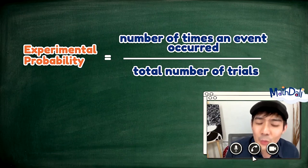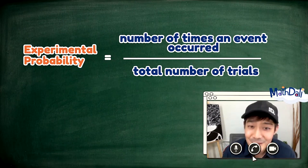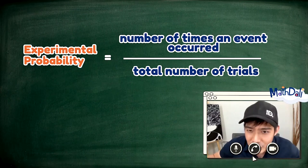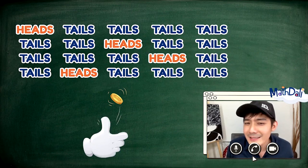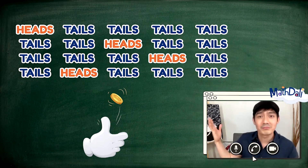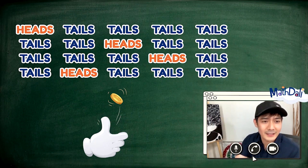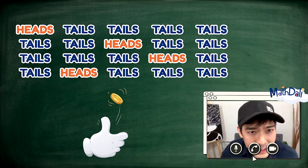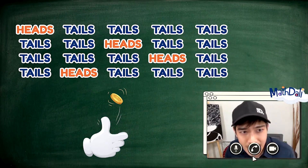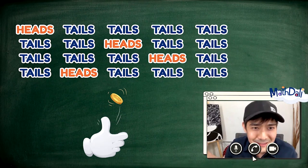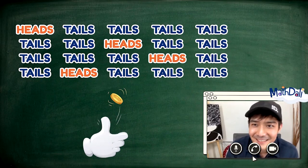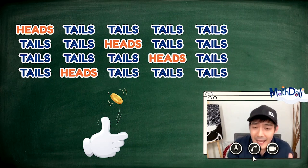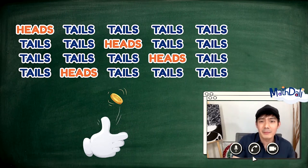Halimbawa, 20 times akong nag-toss ng isang coin. At sa 20 times na yun, ito yung naging result natin: heads, tails, tails, tails, tails, tails, heads, tails, tails, tails, tails, heads, tails, tails, heads, tails, tails, tails, tails, tails. Lagayin natin ang result, tally, frequency, at probability sa isang magandang table.